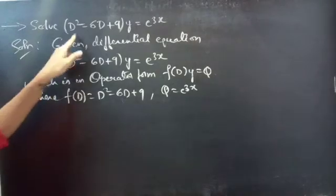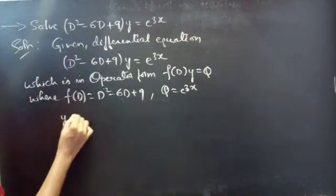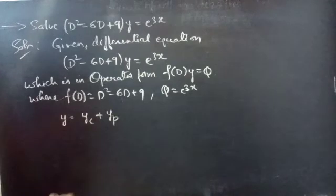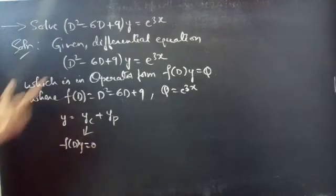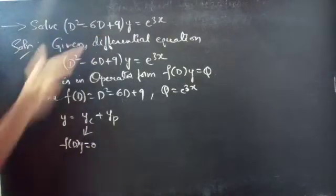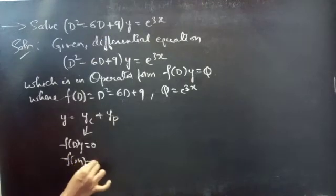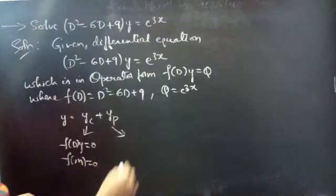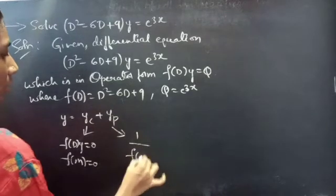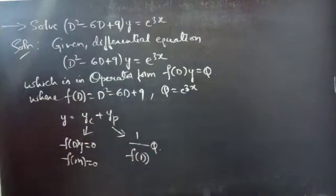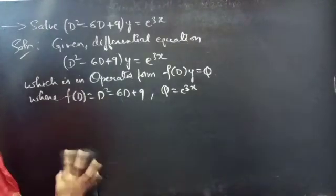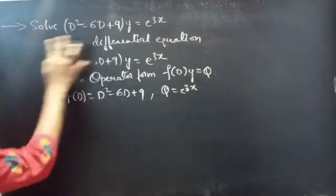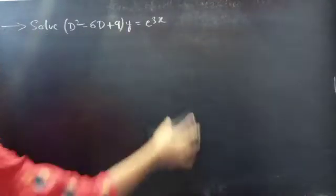Now we need to find the solution to the given equation, which is given by y = yc + yp. Where yc is the complementary function obtained from the homogeneous equation of the given non-homogeneous equation using auxiliary equation f(m) = 0. And yp is given by (1/f(D))·Q.